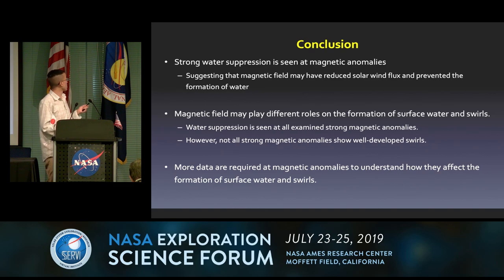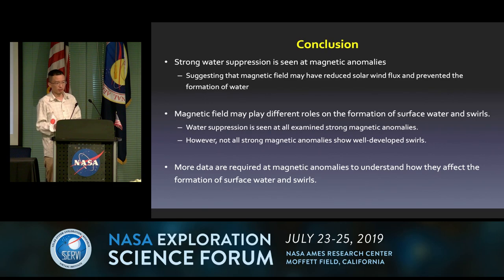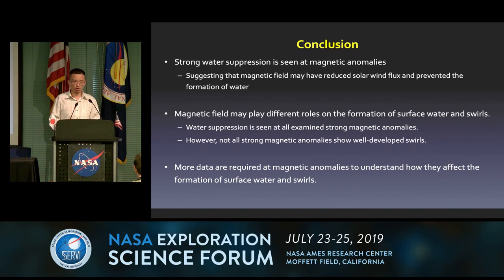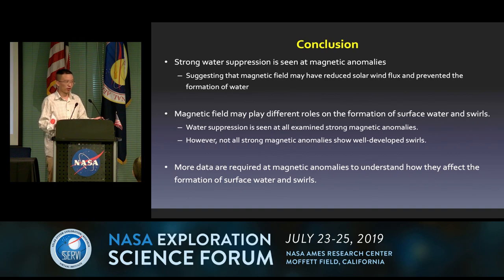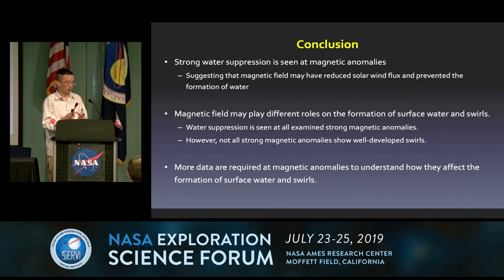In conclusion, we see strong water suppression at magnetic anomalies, and I suggest that magnetic field may have reduced solar wind flux and prevented the formation of water on the surface — supporting solar wind implantation as a major contributor to surface water. The magnetic field may play different roles in the formation of water and swirls. We see strong suppression in water content at all strong magnetic anomalies, but not all strong magnetic anomalies show well-developed swirls, and we need more data to understand the structure of those magnetic fields.